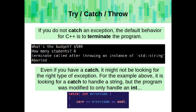If you do not catch an exception, the default behavior for C++ is to terminate the program. Even if you have a catch written, it might not be looking for the right type of exception. In the example above, it is looking for the catch to handle a string, but the program was modified so it only handles an int exception.